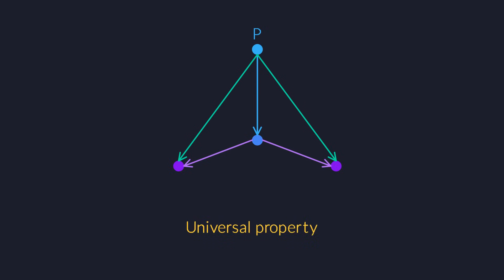This is why it's called a universal property. The amazing thing is that the diagram doesn't say anything about the values inside the types. The entire construction is reduced to objects and arrows between those objects.